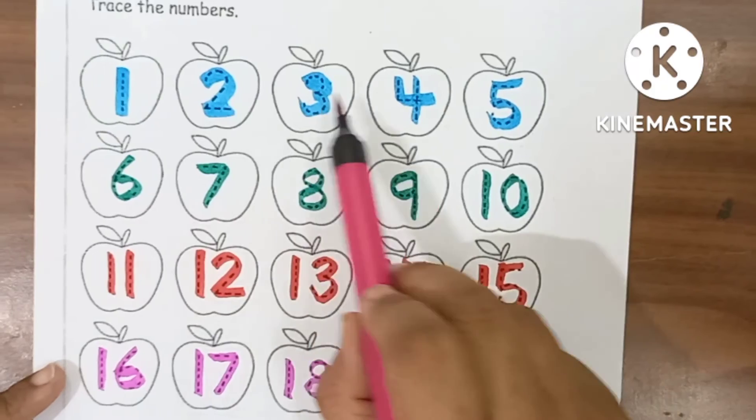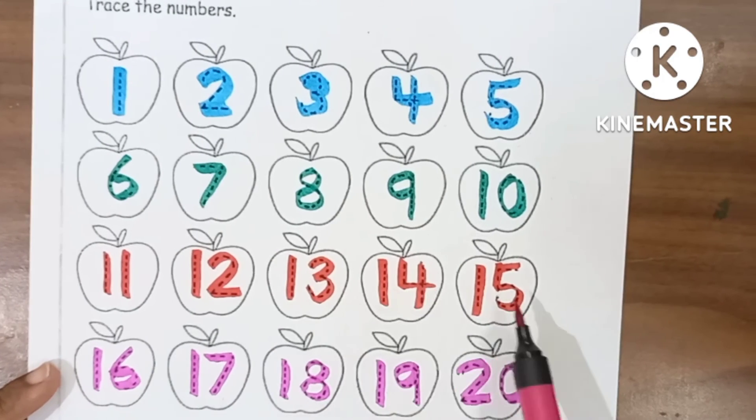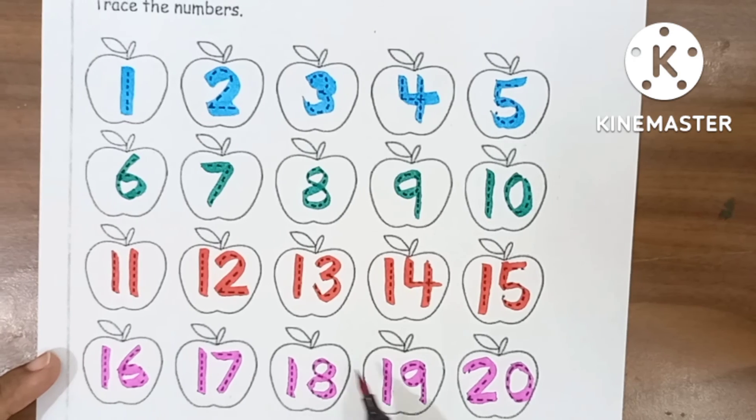1, 2, 3, 4, 5, 6, 7, 8, 9, 10, 11, 12, 13, 14, 15, 16, 17, 18, 19, 20.